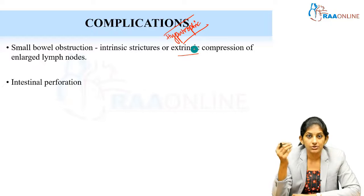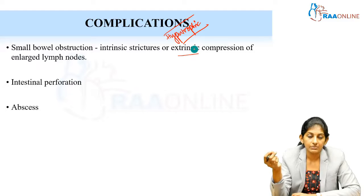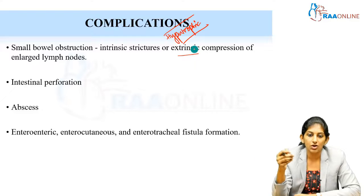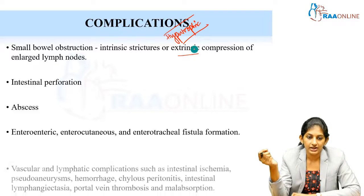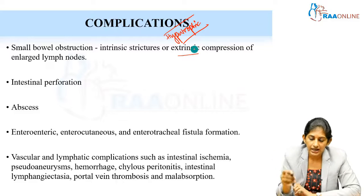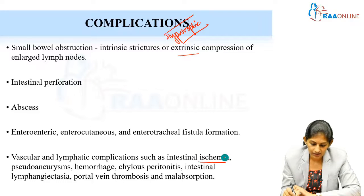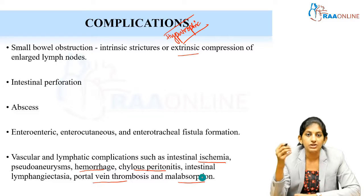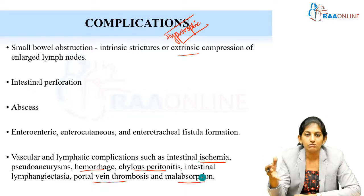The next complication is perforation — the ulcerative form may present as intestinal perforation. Abscesses can also be seen, and abscesses can rupture outside resulting in fistulas: enteroenteric, enterocutaneous, or enterotracheal fistulas. Other less common complications include intestinal ischemia, intra-abdominal hemorrhage, chylous peritonitis, portal vein thrombosis, and malabsorption. Understanding the mechanism of abdominal TB helps you identify all these complications.